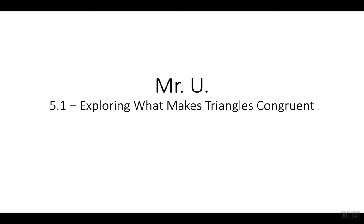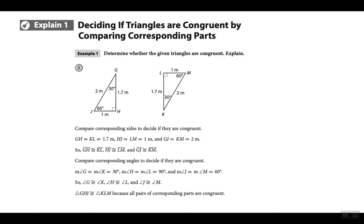Chapter 5.1: Exploring What Makes Triangles Congruent. The first part of this chapter is basically giving you two triangles and you have to check if they are congruent. It's very simple — in order to be congruent, all three angles have to measure the exact same amount and all three sides have to measure the exact same amount.